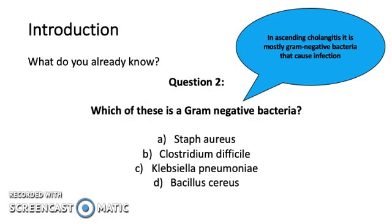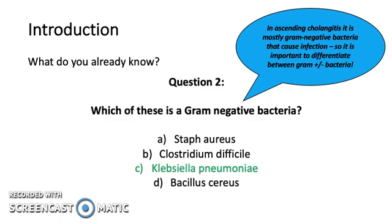Which of these is a gram-negative bacteria? In ascending cholangitis, it is mostly gram-negative bacteria that cause infection. The answer is Klebsiella pneumoniae. It is important to differentiate between gram-positive and gram-negative bacteria.